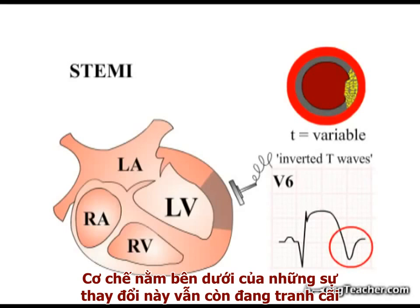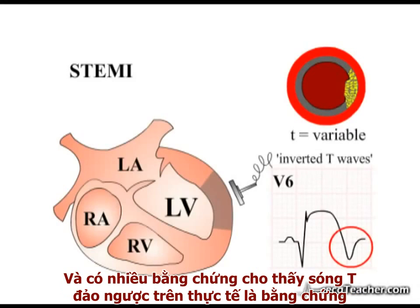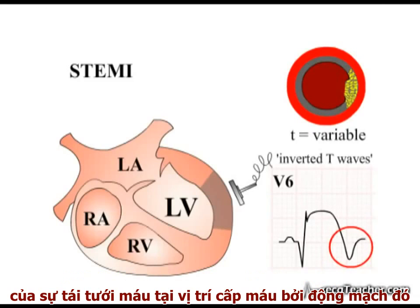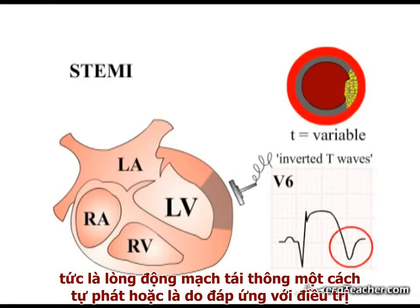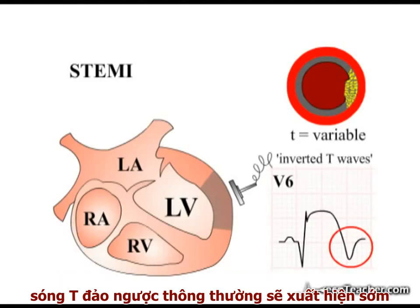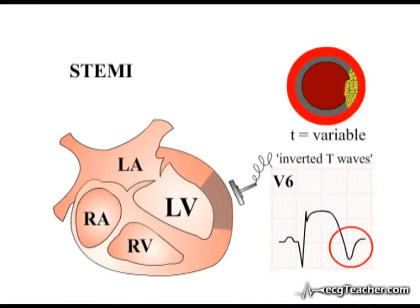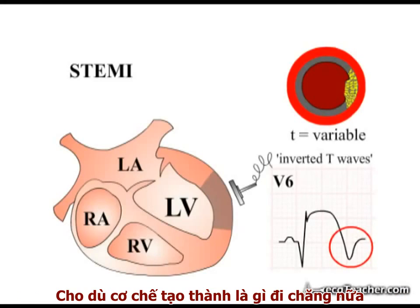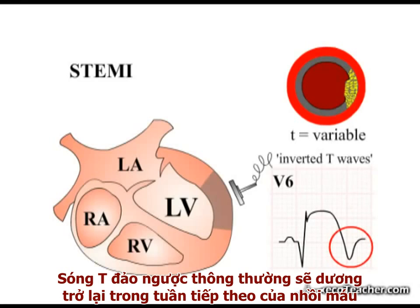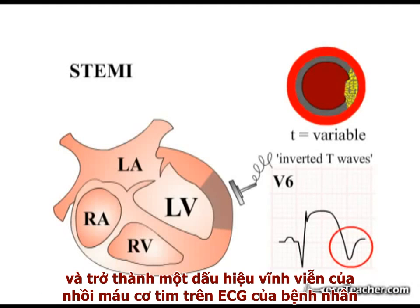The mechanism underlying this change is controversial. The process of clot formation in acute MI is dynamic, and there is some evidence that T-wave inversion may actually reflect re-perfusion of the area supplied by the vessel as it re-cannulates, either spontaneously or in response to treatment. In support of this view, flipped T-waves are commonly seen to develop shortly after thrombolytic therapy is initiated for STEMI. Flipped T-waves generally return to the upright configuration in the week following infarction, but occasionally can persist as a permanent marker of the infarct on the patient's ECG.